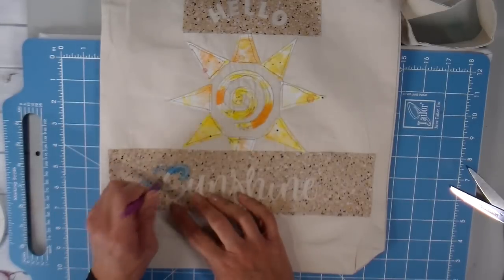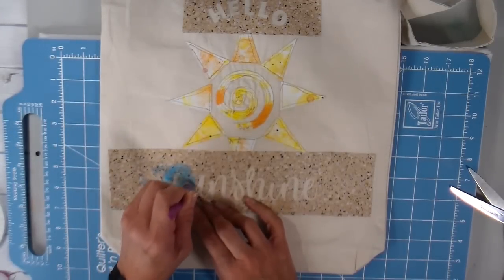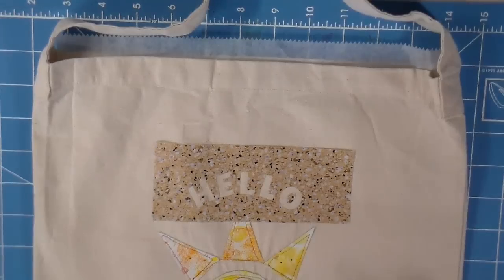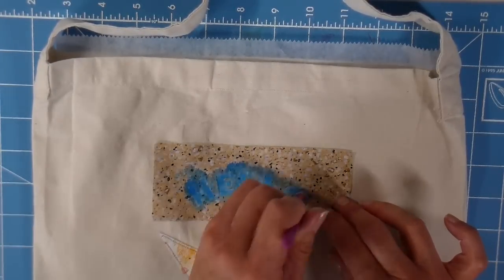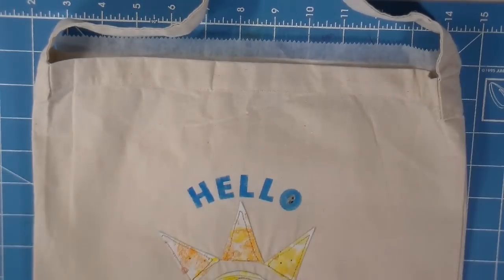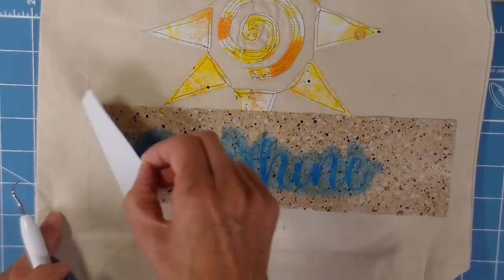I have my design on contact paper and I'm just using it as a stencil. I used my Silhouette Cameo to get this design onto this contact paper. And now getting rid of my inside of my letters using a little weeding tool.